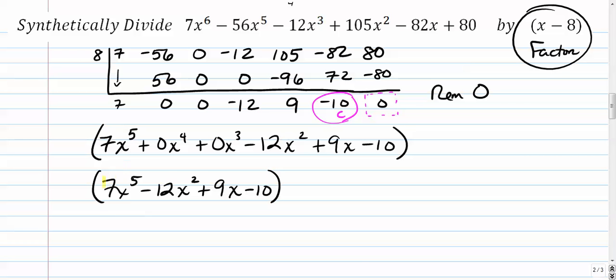So that's what you're left with when you divide that whole big crazy 6th degree polynomial by this linear x minus 8. It's just 7x to the 5th. We skip over these. We don't need those. Minus 12x squared plus 9x minus 10.